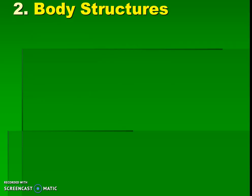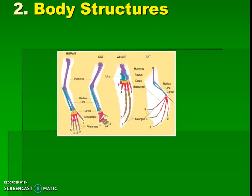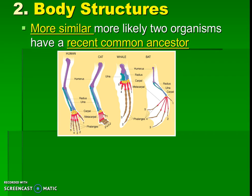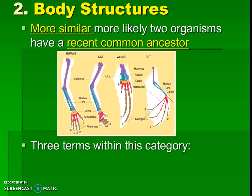Body structures is one of our biggest focus areas this year. When we think about body structures we can be thinking about looking at the bones, the components, and the shapes of the bones. The big idea here is: the more similar those body or bone structures are, the more likely two organisms have a recent common ancestor. We can look at this image where we have a human, cat, whale, and bat. We can see that the structures making up their arm and hand are the same — slightly different shapes but the same type of structure throughout, even though these are such different animals using their structures for such different reasons.